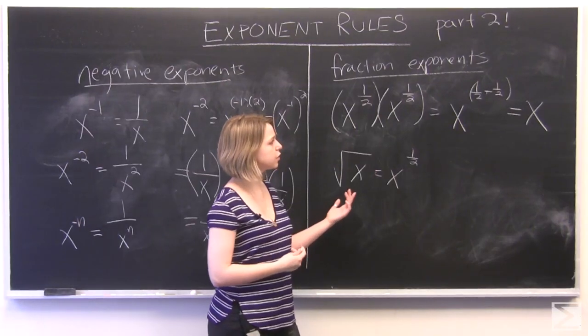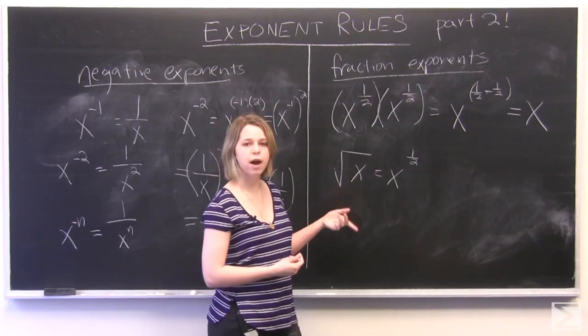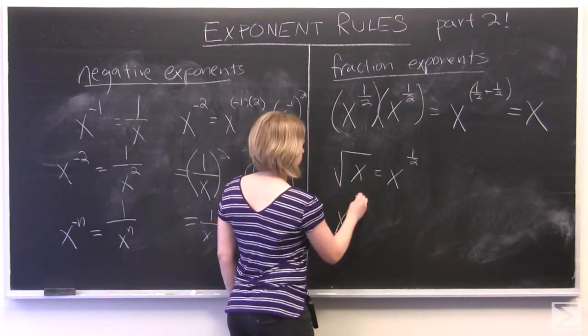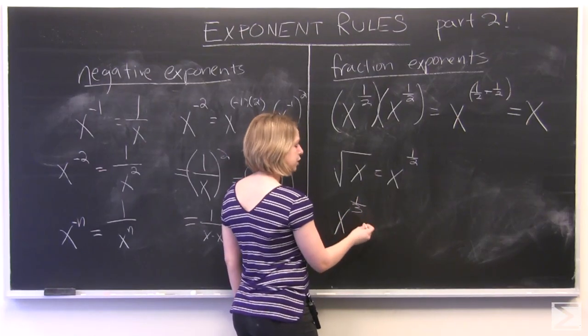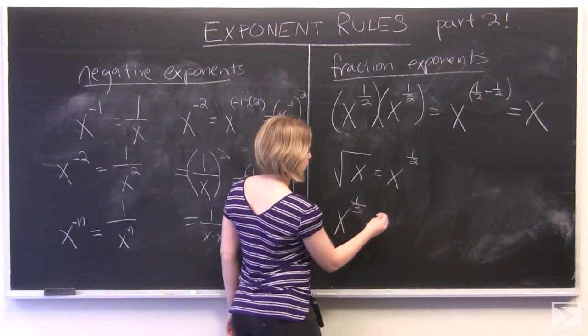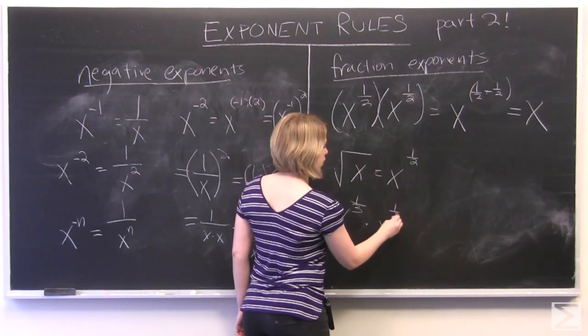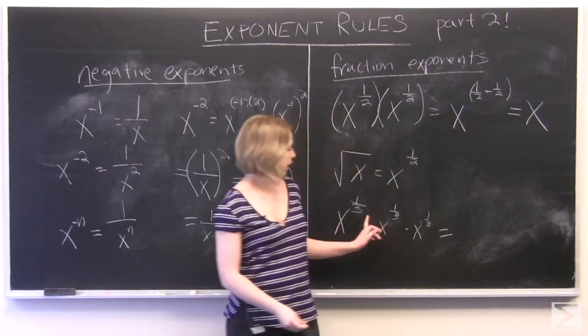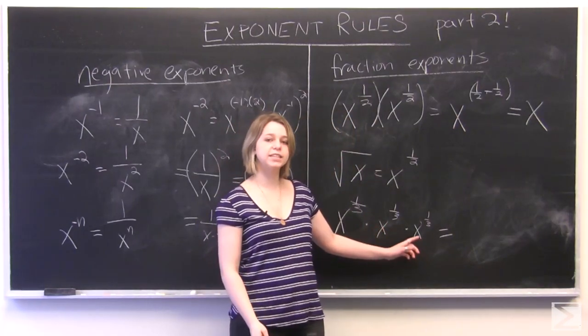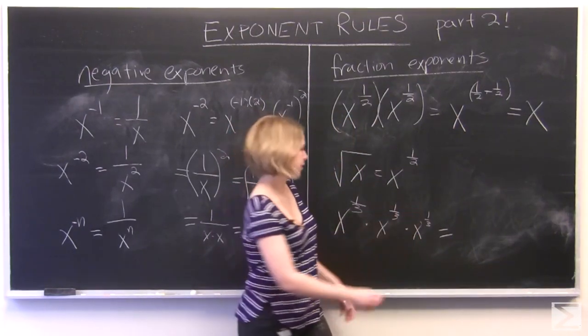We can explore this further. What if we had x to the power of 1 third? If we multiplied x to the power of 1 third by itself three times, we multiply our quantities together by adding up their exponents.